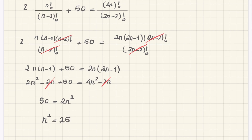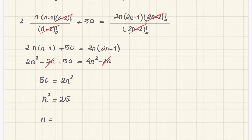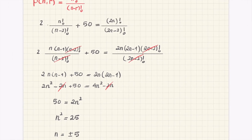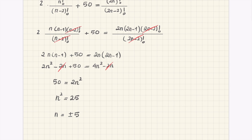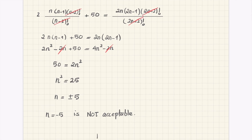Taking the square root gives plus or minus 5. But because n is used in this permutation symbol, n must be a natural number, so n equals minus 5 is not acceptable — it is a false root. Therefore, the only answer to this problem is n equals 5.